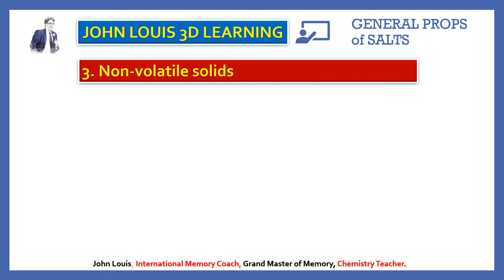The third property is non-volatile solids. Non-volatile means: for example, when we worship and light camphor, the camphor evaporates when heated. But most salts are non-volatile — sodium chloride, for example, cannot evaporate and no vapor is produced.